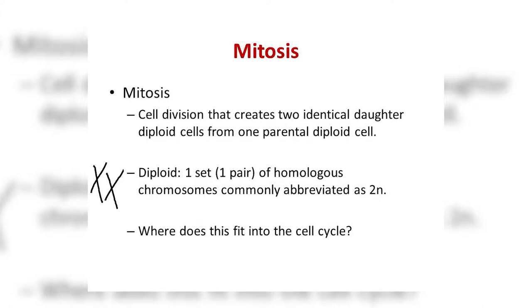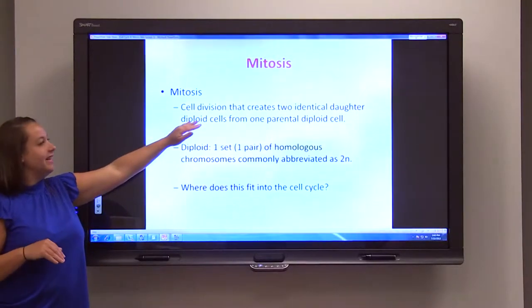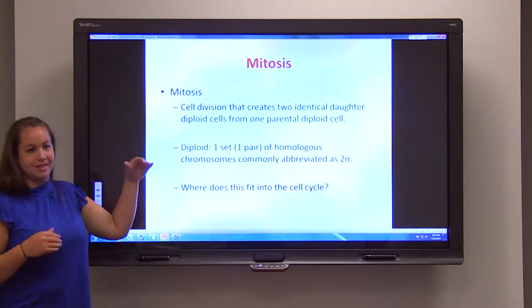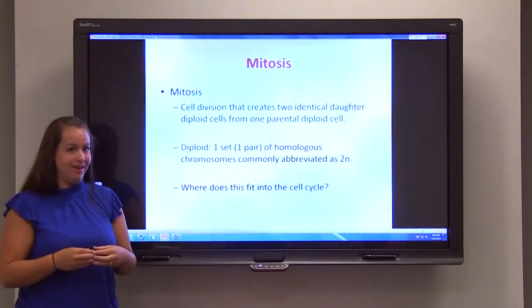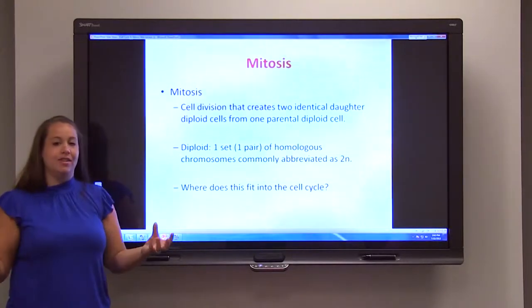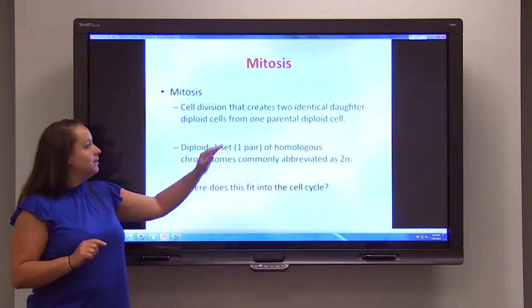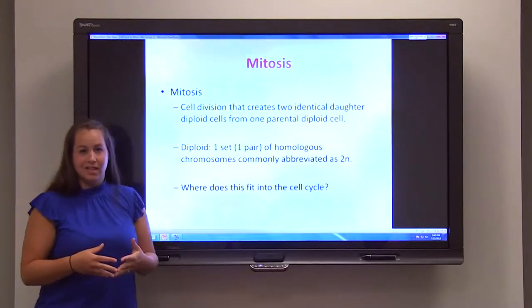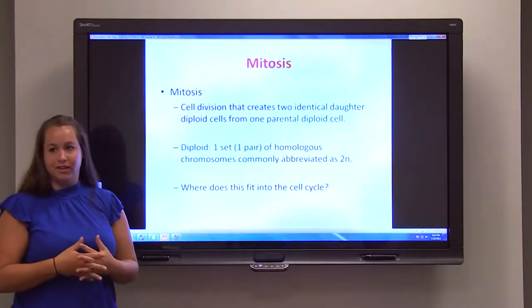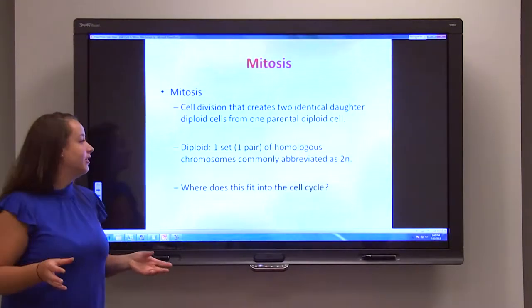Now that we understand those important terms, it's time to identify the process of mitosis. It is a cell division process — or cell reproduction process — where you start off with one cell that is diploid in nature, and it divides to create two identical daughter cells that are also diploid in nature. It's important to note that 'daughter cells' is just a term — it does not imply any gender. It simply means one cell starts off and creates two identical daughter cells.